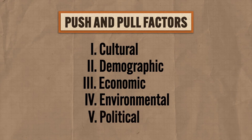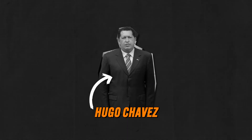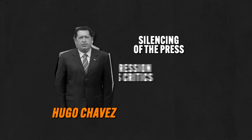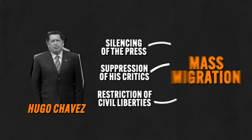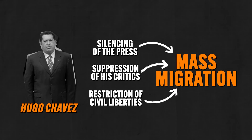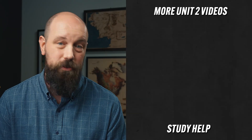Fifth, these factors can be political. People may migrate when an oppressive political leader comes to power — for example, when Hugo Chavez became president of Venezuela in 1999, his silencing of the press, suppression of critics, and restriction of civil liberties caused a mass migration of people seeking lives under more free political regimes. War is another political push factor: the Syrian Civil War, which began in 2011, has been responsible for the emigration of more than 5 million Syrians seeking safer conditions elsewhere.